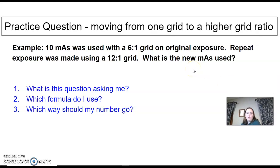Alright, so this is a practice question on moving from one grid to a higher grid ratio. It's asking me: 10 mAs was used with a 6:1 grid on the original exposure. The repeat exposure was made using a 12:1 grid. What is the new mAs?